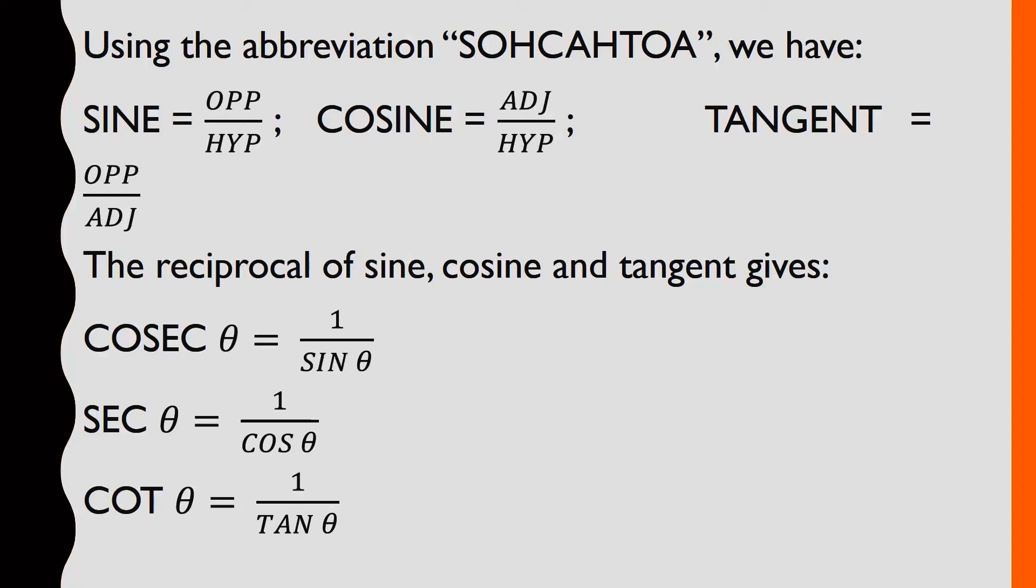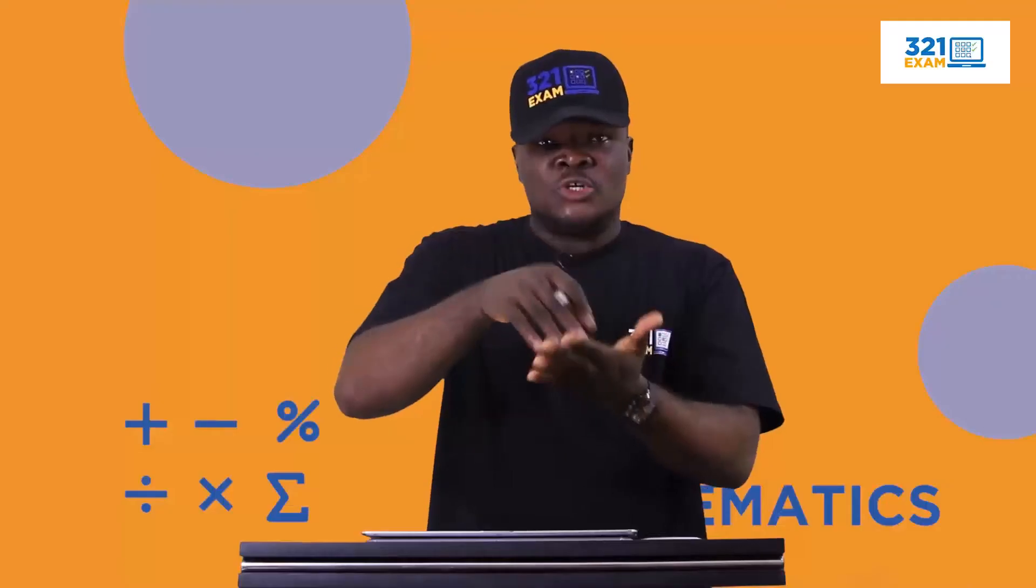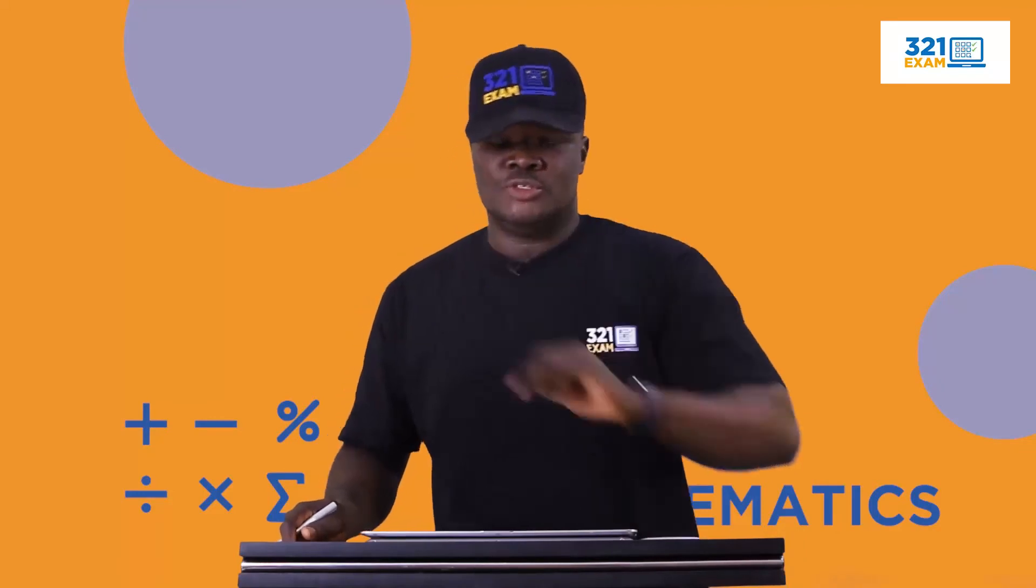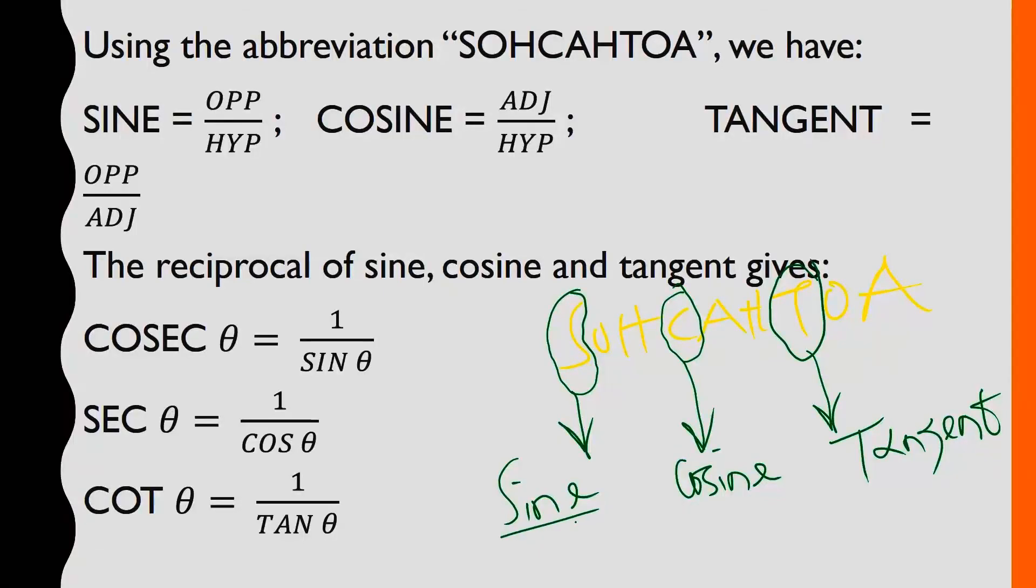Now, let's quickly look at this abbreviation, very popular one: SOHCAHTOA. What does this help us to attain? It tells us that the three trigonometric functions are: S standing for sine, C standing for cosine, T standing for tangent. There are three important trigonometric ratios or trigonometric functions: one, sine; two, cosine; three, tangent.